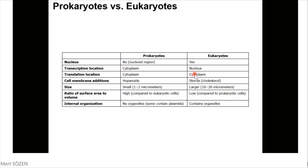In this table, you can see a comparison of prokaryotic and eukaryotic cells. Nucleus is not present in prokaryotes, but it is present in eukaryotes. Transcription is done in the cytoplasm of prokaryotes, but in the nucleus of eukaryotes. Translation, which is protein synthesis, is done in the cytoplasm of both. Cell membrane additions: hopanoids in prokaryotes, but in eukaryotes, sterols — especially cholesterol. Size: prokaryotic cells are small, but eukaryotic cells are larger. Internal organization: there are no organelles in prokaryotes, but eukaryotes contain organelles. Prokaryotes have only one organelle, which is the ribosome.